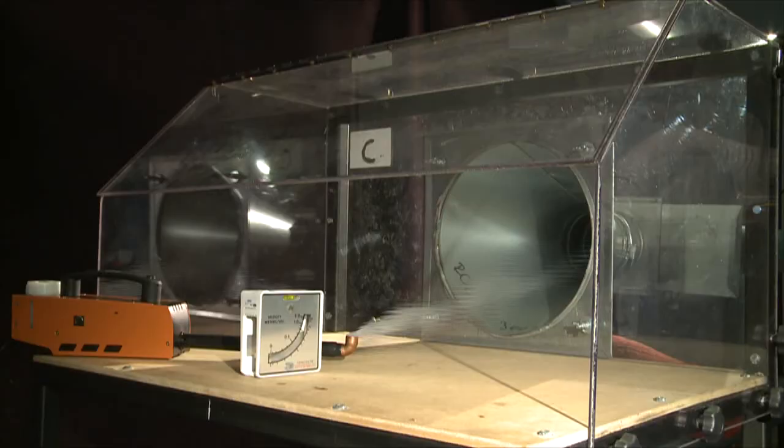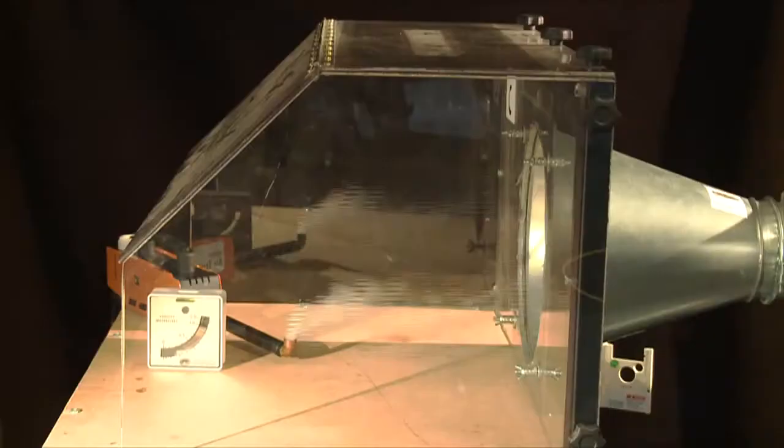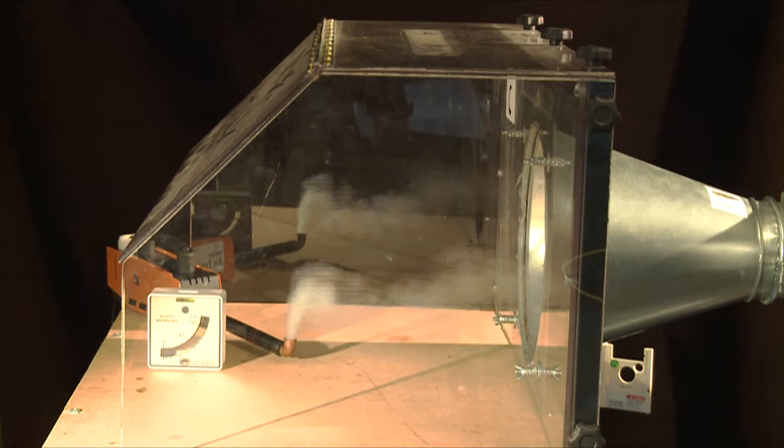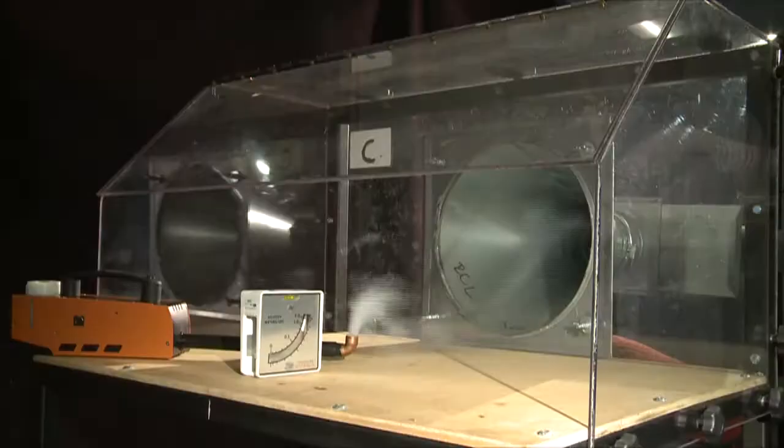Moving from a capture hood to an enclosed hood gives far more effective control and helps protect the process against the effect of drafts. It also makes it easier to reduce the volume flow rate without loss of containment.